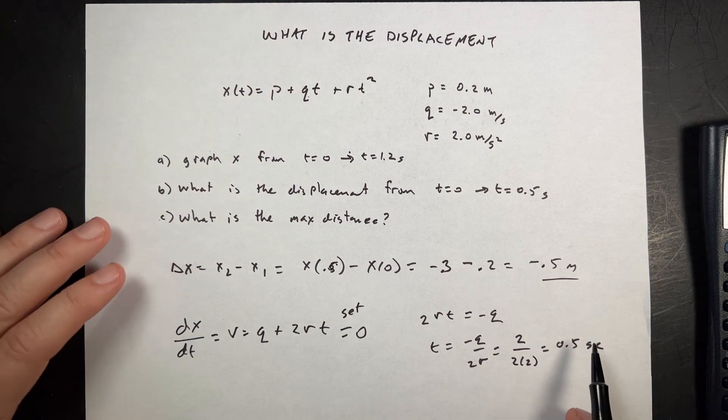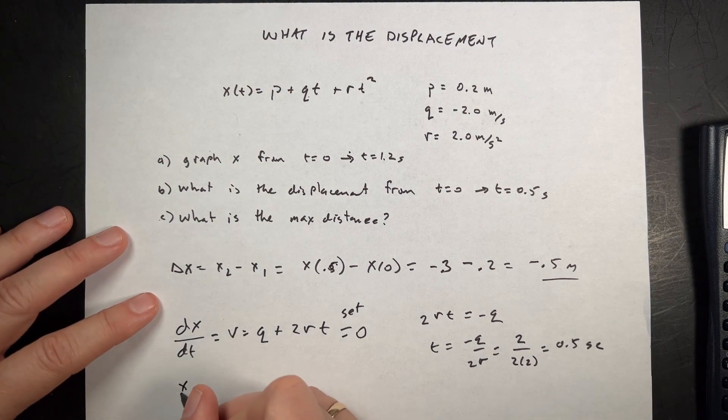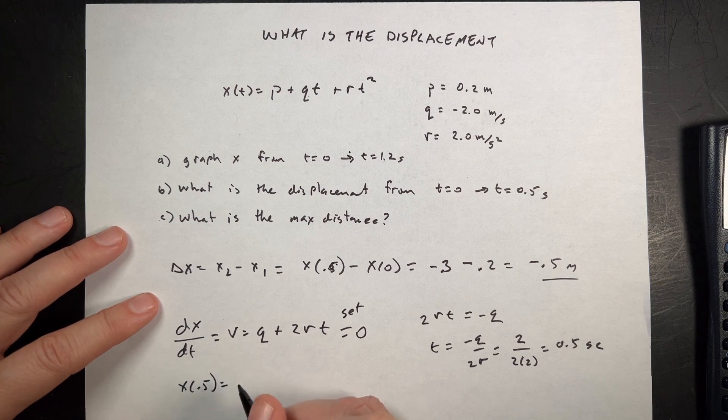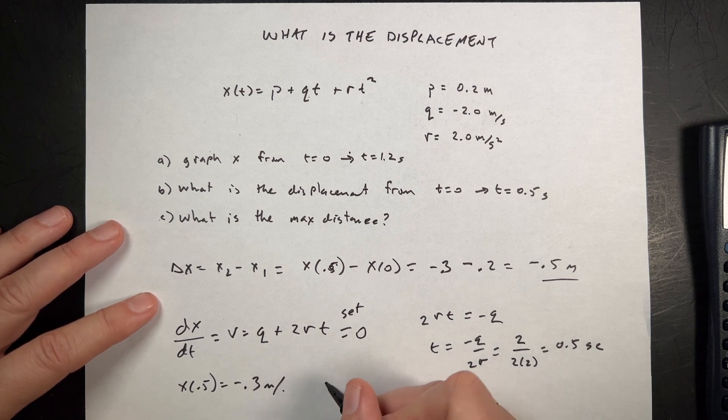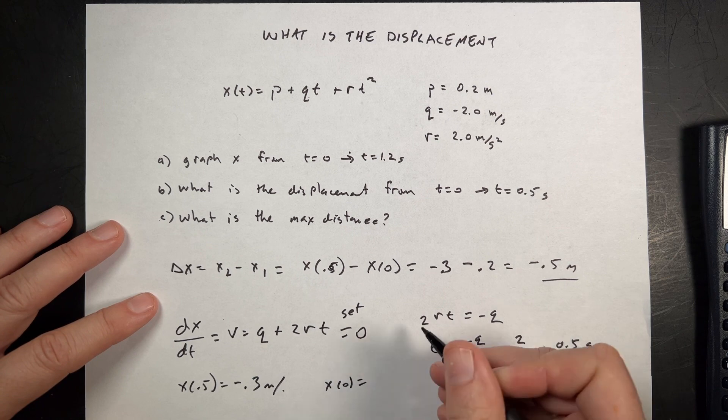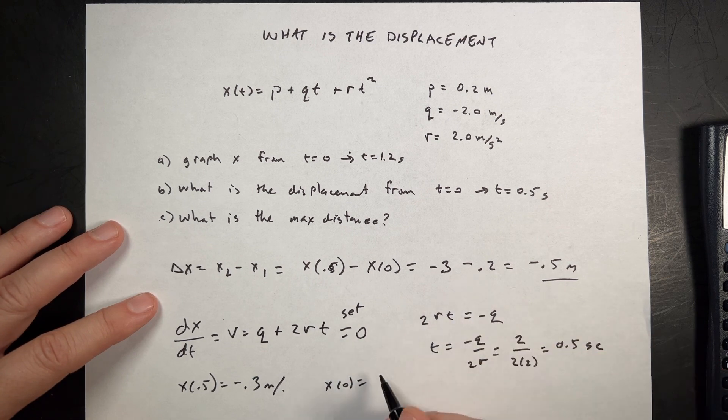And then to find that position, I'm going to say X at 0.5, which I already did, is negative 0.3 meters. But I need to check the endpoints. So I need to also check X at 0, which I did, it's 0.2.